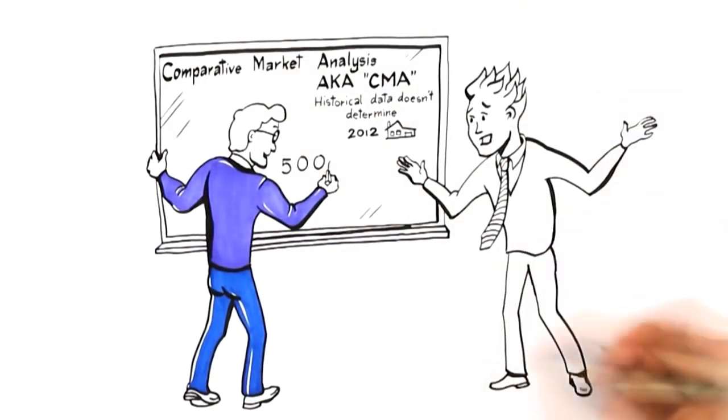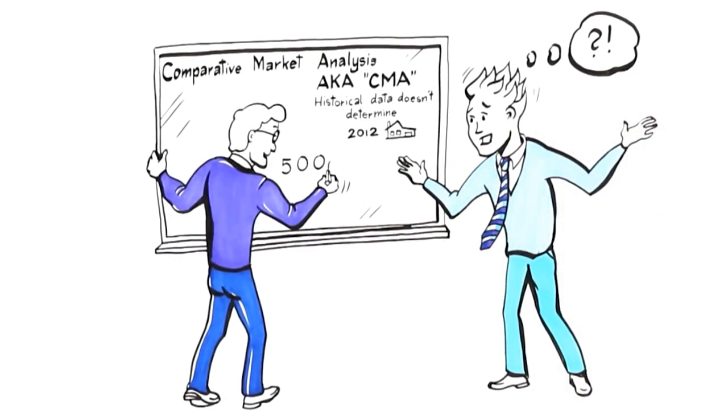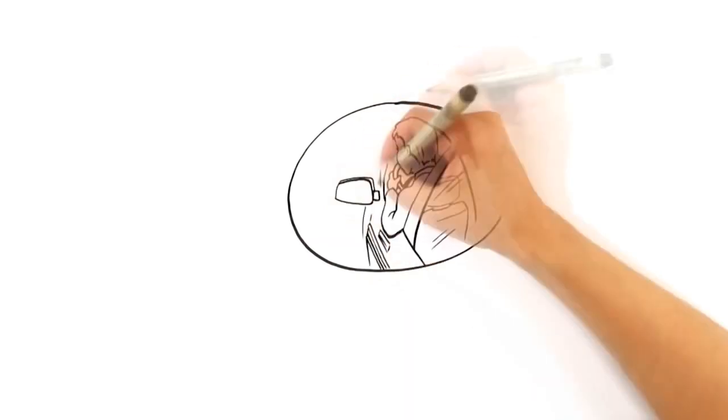What most agents don't realize is that historical data doesn't determine how you should position your home in today's market to attract the highest offer. This would be like driving your car while looking in the rear-view mirror.